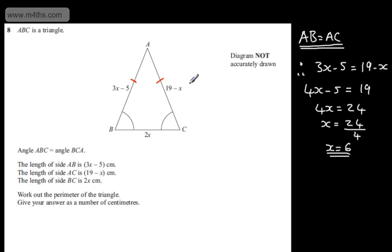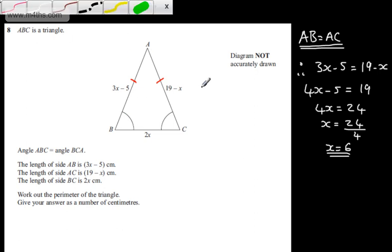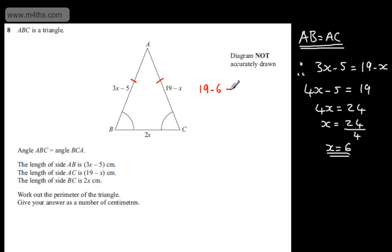So all I'm going to do is substitute this back in and work out the perimeter. The perimeter is simply AC plus CB plus AB. So let's go ahead and do that. This length right here we have 19 minus 6, which is going to give me 13, and remember we are working in centimeters. We're going to have 2 lots of 6, which is going to give me 12, and then we're going to have 3 lots of 6 minus 5. That is 18 minus 5, which we know to be 13.